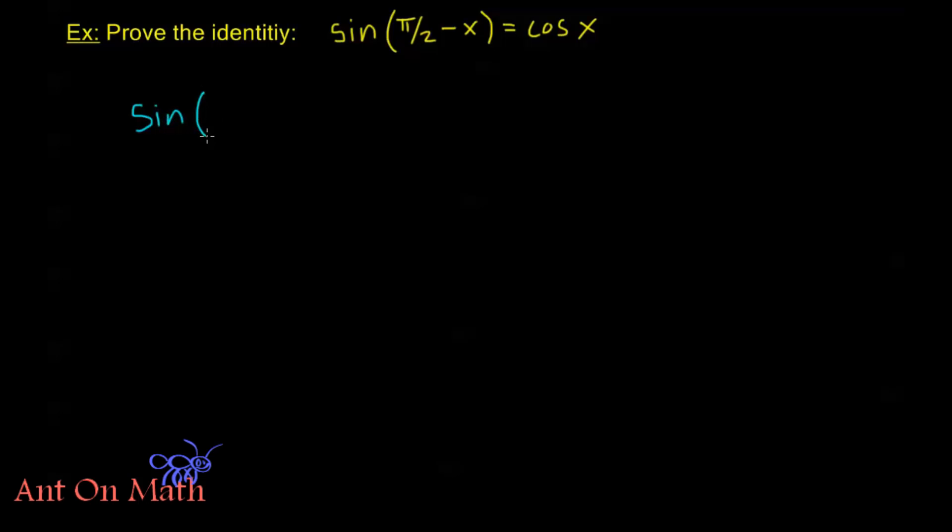Sine of pi over 2 minus x. We're proving an identity, so we want to start with left-hand side or right-hand side. I'm going to start with the left-hand side here. It's a little bit easier. Now with my subtraction formula for sine, this is just sine of pi over 2, cosine x, minus. Remember, in sine, the plus and minus signs are transparent, so minus goes to minus, and this is cosine pi over 2, sine of x.